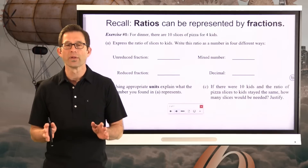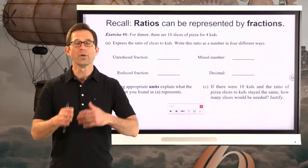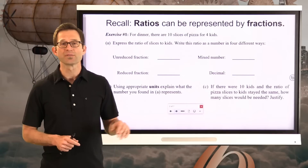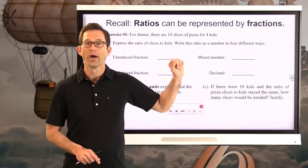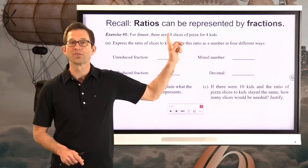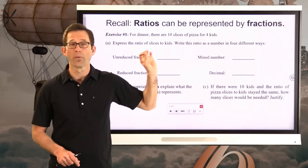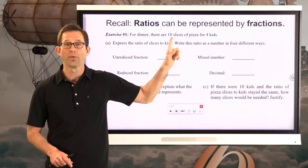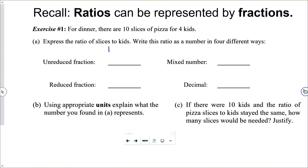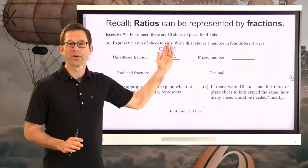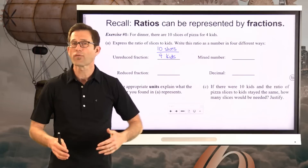It's really important — and I'm going to include units especially in the first two. So as an unreduced fraction, we've got the ratio of slices to kids: 10 slices per four kids. Remember when we represent a ratio as a fraction we put that first number in the numerator and that second number in the denominator. So we've got 10 slices per four kids, and without the labels we've just got the fraction ten-fourths.